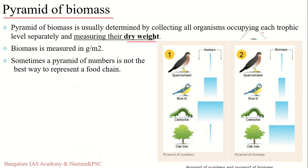The total weight referred to here is the total dry weight — that is, the weight of biomass excluding the water content of the body. For example, for a cow, you consider only the biomass weight excluding its water weight. A pyramid of biomass is determined by collecting all organisms at each trophic level separately and measuring their dry weight, which overcomes the size difference and number problems.